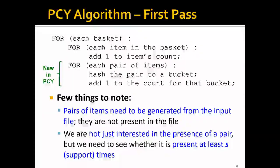We're not just interested in the presence of a pair, but we need to see whether it's present at least S times, where S is the support threshold. If it's not present at all, we don't need to count it in the second pass. But what's even better is that if we know it's not present at least S times, we can also eliminate this item pair from the second pass.